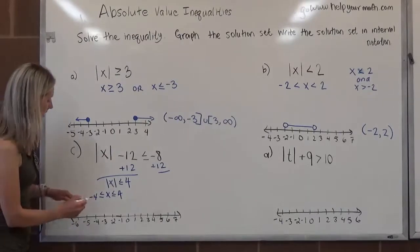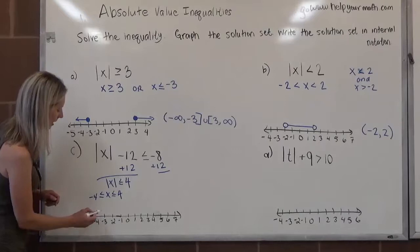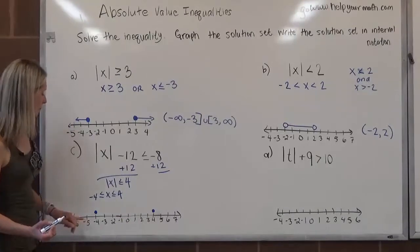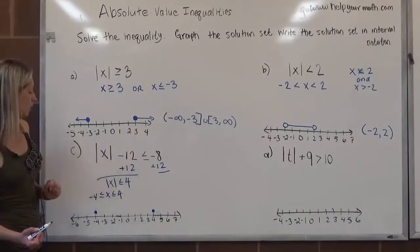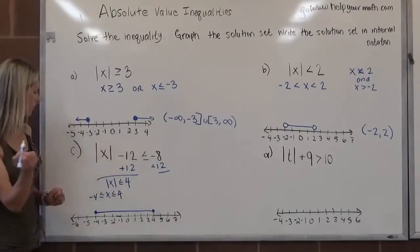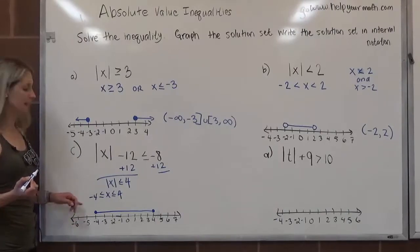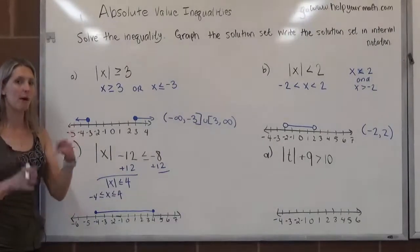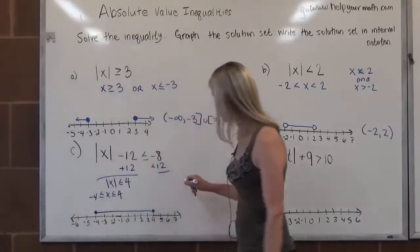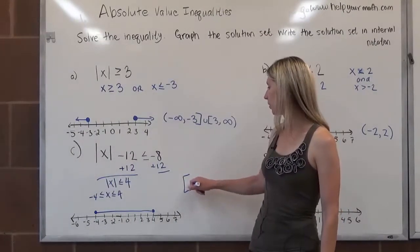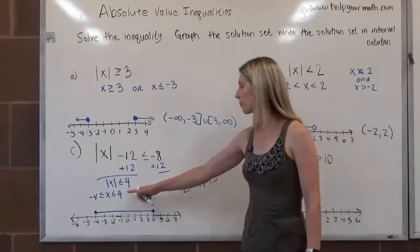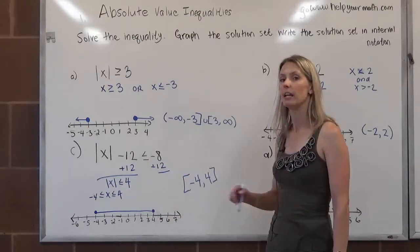For the graph: negative 4 is included, so we use a closed circle over negative 4; 4 is included, so we use a closed circle over 4. The numbers closer to 0 than 4 lie in between, giving us a single line segment bounded by negative 4 and 4. In interval notation, since both endpoints are included, we write from negative 4 to 4 with brackets. So we have our three representations: algebraic, graphical, and interval notation.